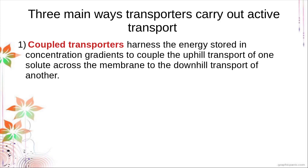For example, solute 2 is also greater inside than outside. For coupled transporters, it will transport solute 1 but also transport solute 2 in a different direction. One solute follows the concentration gradient — passive transport — and the other is active transport. Meaning, the coupled transporter harnesses the passive transport of one solute to transfer another solute against the concentration gradient.